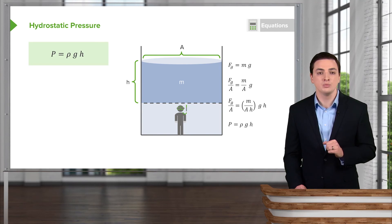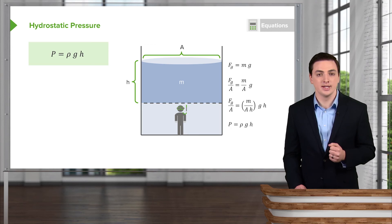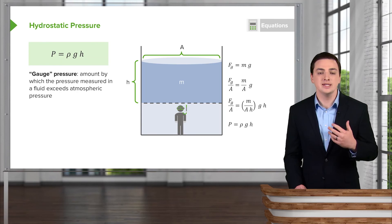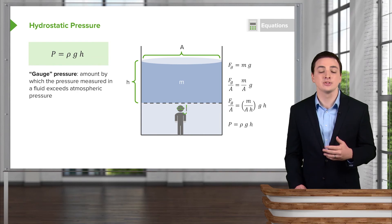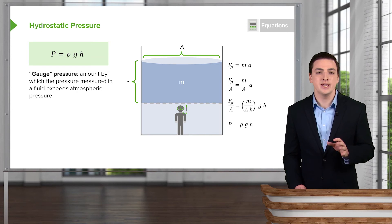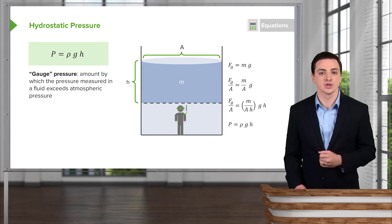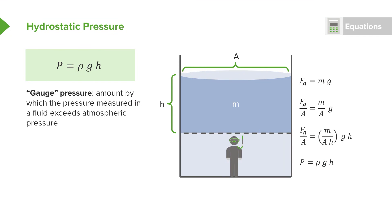So this pressure, which is equal to rho g h, an expression you'll hear quite often, pressure equals rho g h, is in fact only what we call the gauge pressure. And by that we just mean it's the pressure amount by which the pressure measured in a fluid exceeds the atmospheric pressure. In other words, what I've just mentioned here, all this analysis of the weight of the water on top of you, bearing down on top of you, is just the pressure from the water. We haven't also included the atmospheric pressure yet.